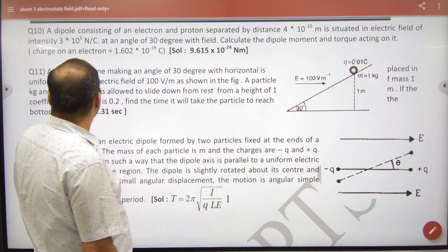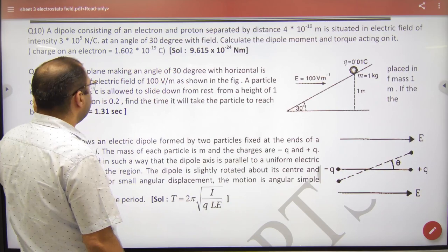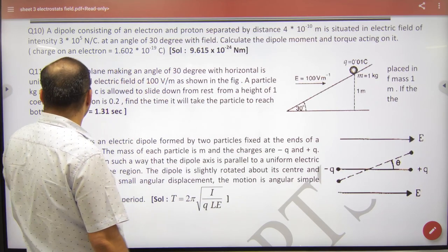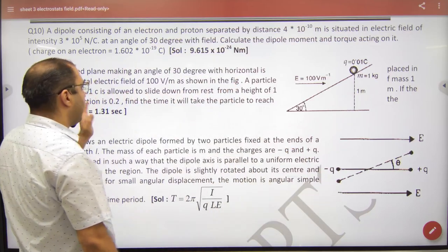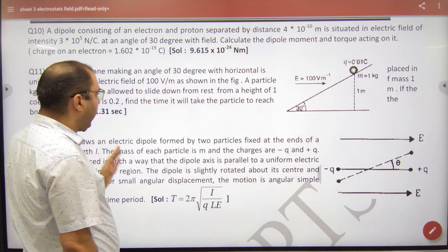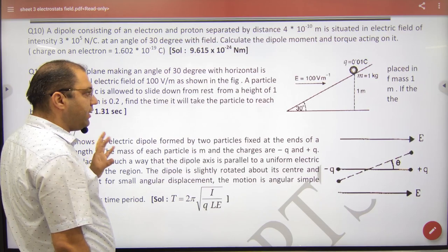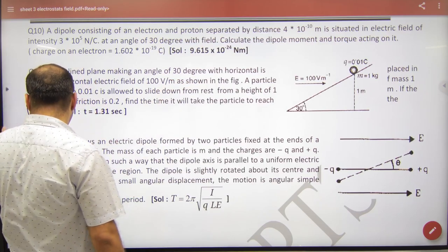Friction is given in this question because it has said that the inclined plane is 30 degrees and it is a uniform electric field. The mass of particle is given as 1 kg and the charge is given. The height is given as 1 meter and the mu is given. Tell the time how long it will come down. This question is.